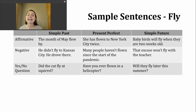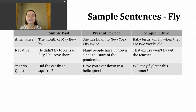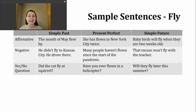To make a negative sentence in the present perfect, use has not or have not and then the participle. Native speakers often use the contraction forms hasn't and haven't. Here's an example: Many people haven't flown since the start of the pandemic.